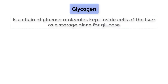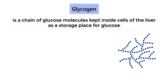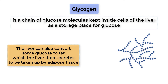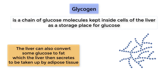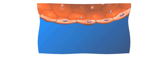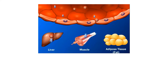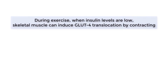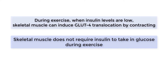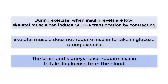The liver is then able to store this glucose as glycogen, which is a chain of glucose molecules kept inside cells of the liver as a storage place for glucose. The liver can also convert some glucose to fat, which the liver then secretes to be taken up by adipose tissue. Insulin can also increase GLUT4 receptors on skeletal muscle, and skeletal muscle can form its own glycogen. However, during exercise when insulin levels are low, skeletal muscle can induce GLUT4 translocation by contracting. Thus, skeletal muscle does not require insulin to take in glucose during exercise. Additionally, the brain and kidneys never require insulin to take in glucose from the blood.